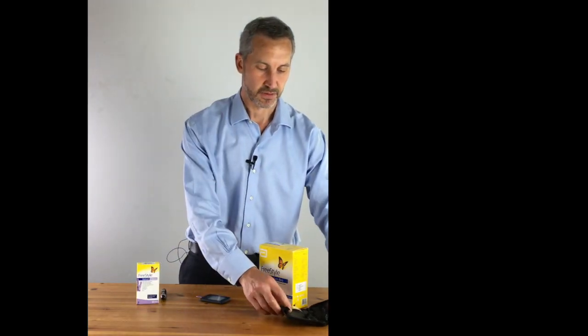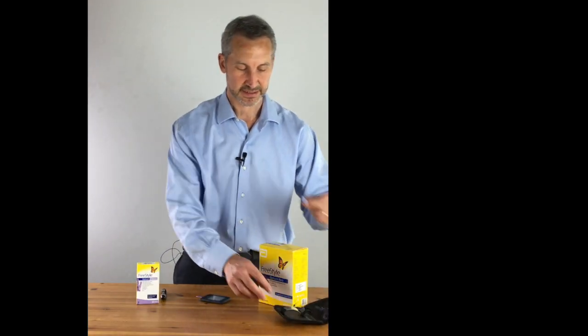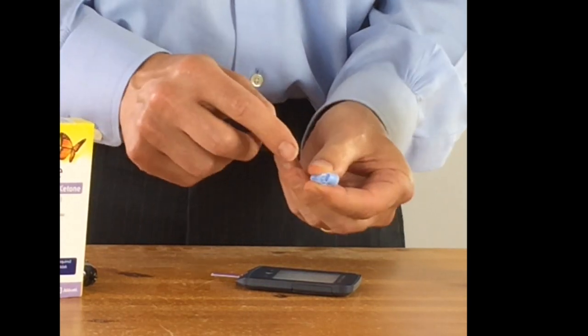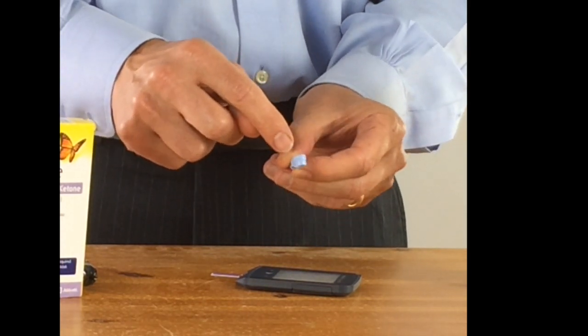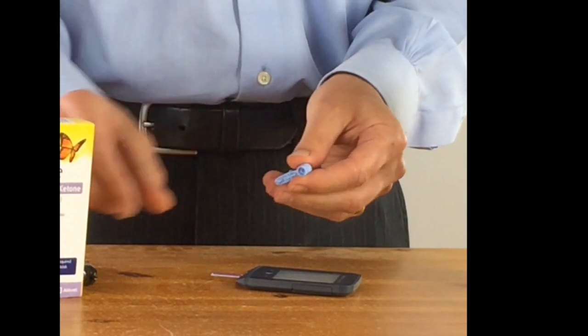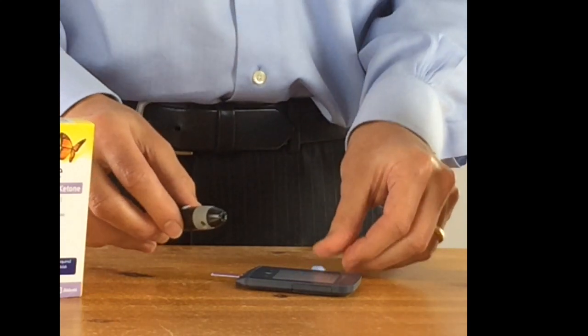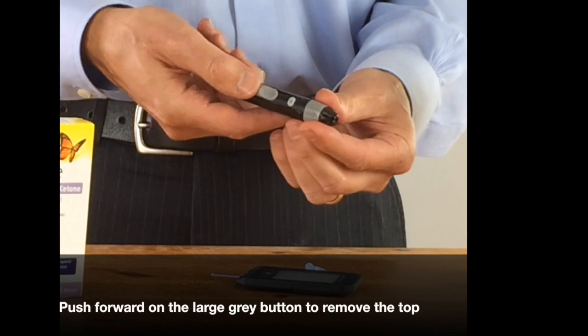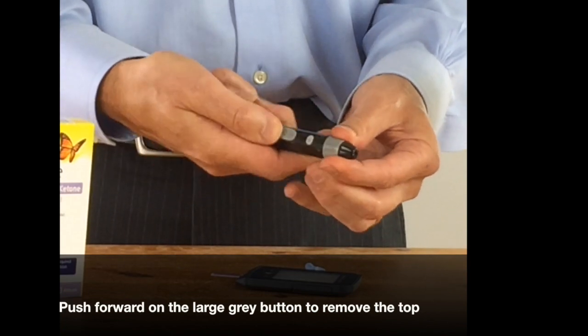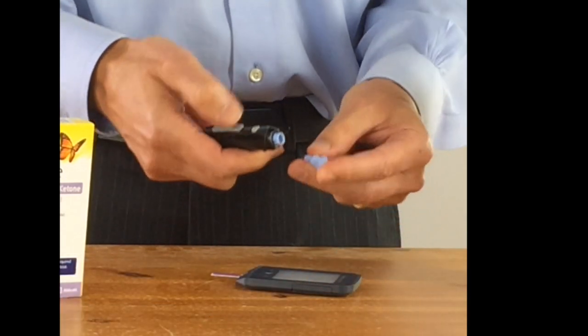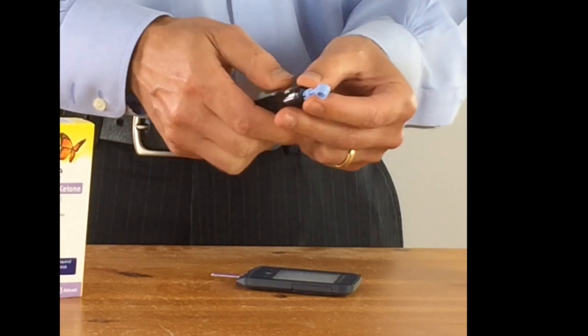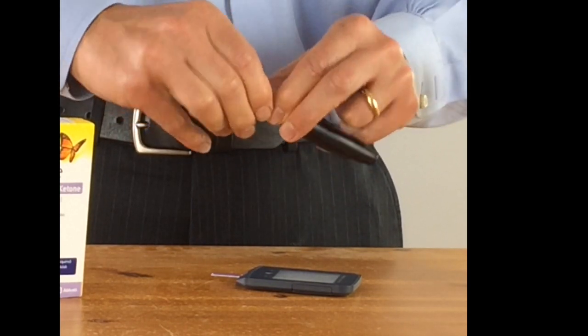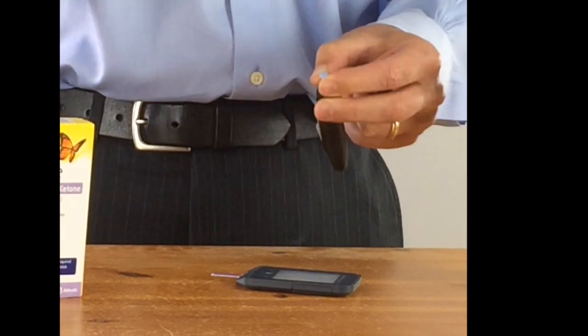You're going to then need one of the thin lancets. Now the lancet comes like this with the little round knob protecting the actual sharp part. In order to open up the actual trigger mechanism, you push forward on this grey lever which pops the top off. You put the lancet inside and then twist the protective cap off. Now keep this protective cap for later.